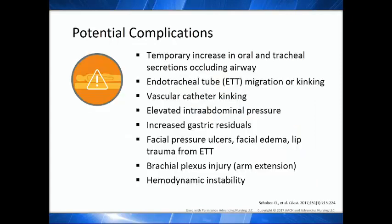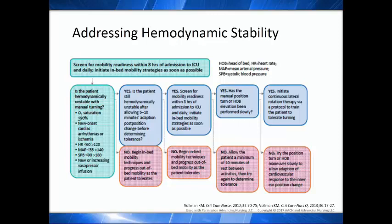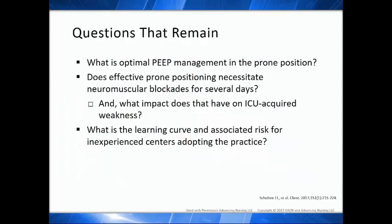Potential complications documented in the research literature include temporary increases in airway pressures — sometimes related to kinking — vascular kinking, and increased gastric residuals. The biggest issue is pressure injuries. We also need to move beyond the idea that patients are too hemodynamically unstable to move. Patients establish a gravitational plane, and the longer they stay in that plane, the more unstable they'll be when you try to turn them. There are many strategies to train patients to tolerate mobility.